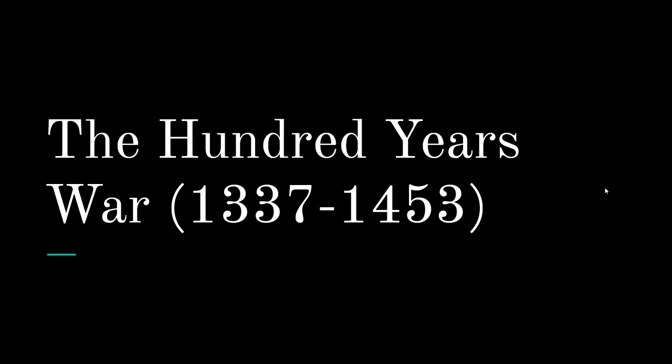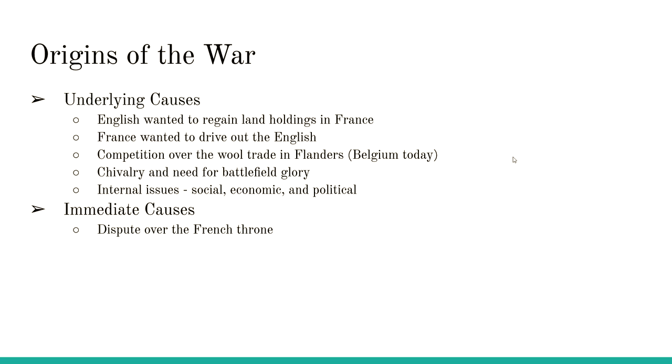The Hundred Years War — first thing you'll notice, it ran from 1337 to 1453, so it actually lasted longer than a hundred years, but it's just called the Hundred Years War for simplicity. Now there are two different ways you can look at this: there are the underlying or long-term causes, and there's the immediate cause — the match that starts the fire, so to speak. By the time we get to 1337, the English land holdings in France had started to decline. England used to own more of France than the French king did, but by 1337 that had changed.